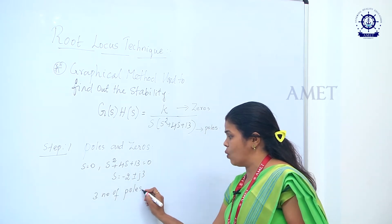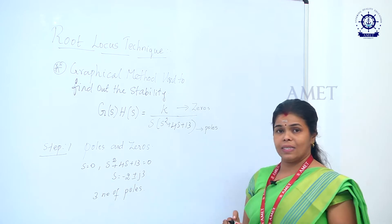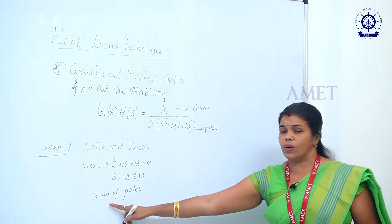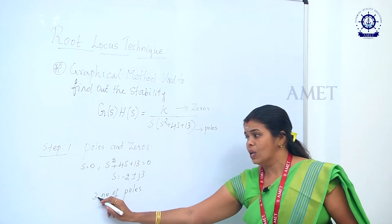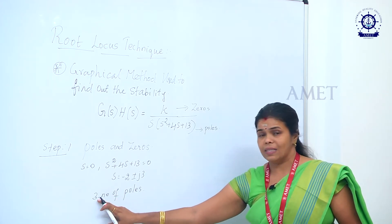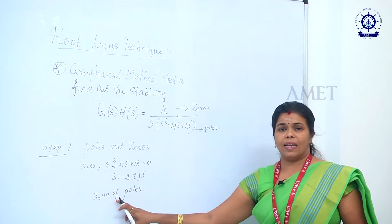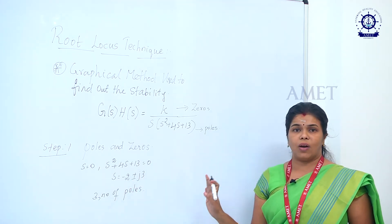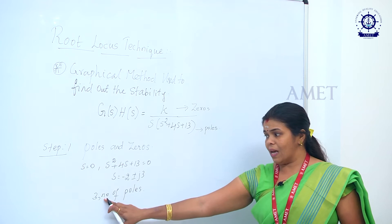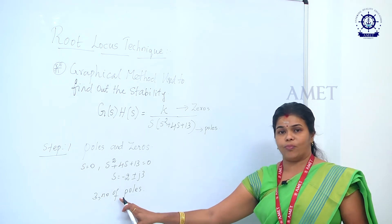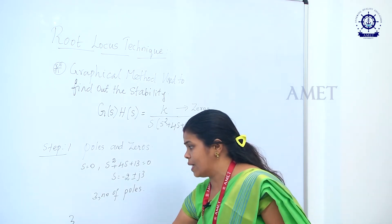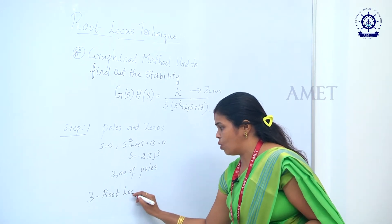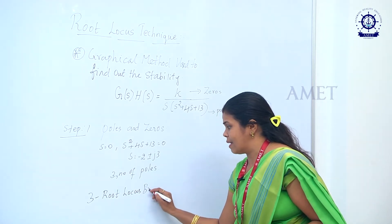We have found that there are 3 poles. Based on the number of poles, we determine how many root locus branches there are. Since we have 3 poles, there are 3 root locus branches.